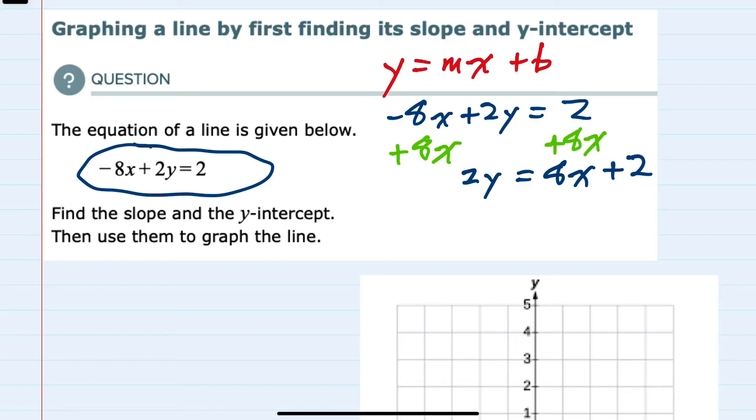Then to solve for y, I'll divide all the terms, both left and right, by 2. This simplifies to y = 4x + 1.